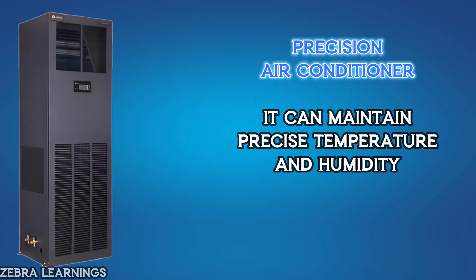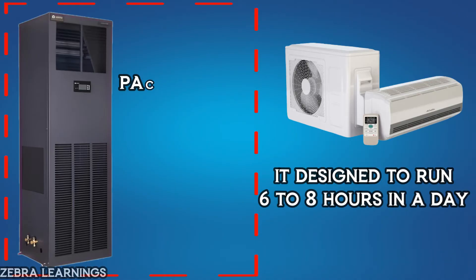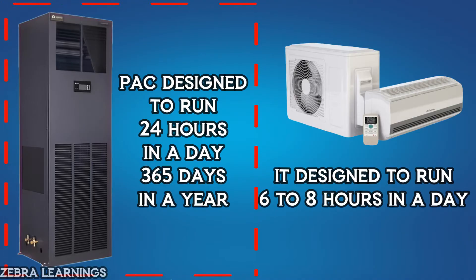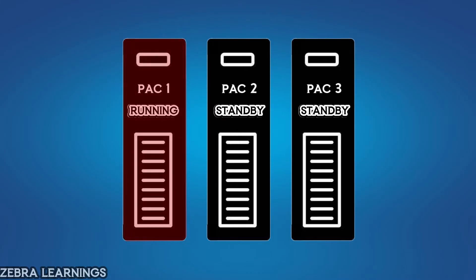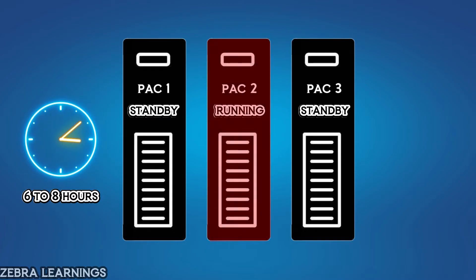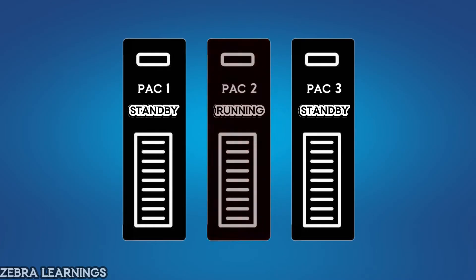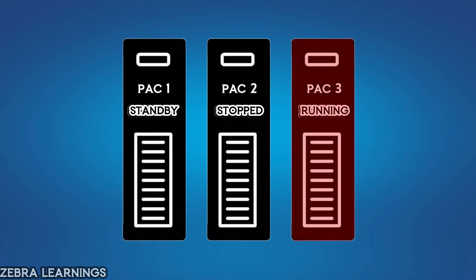But a precision air conditioner can maintain much more precise temperature and humidity. And the normal AC we use runs for about 6 to 8 hours a day. However, PACs are designed to run 24 hours a day, 365 days a year. In most cases, at least 3 PACs are used in a single location. Every 6 to 8 hours, each PAC automatically switches over and takes over the operation. If there is a problem with one PAC, the next PAC automatically starts running, ensuring that the unit remains in continuous operation.